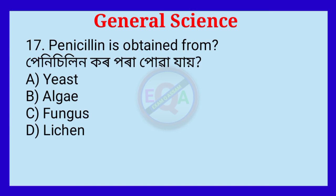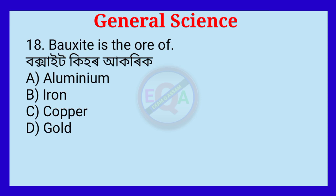Question number 16. Penicillin is obtained from — correct answer: fungus.